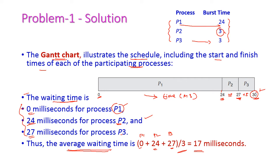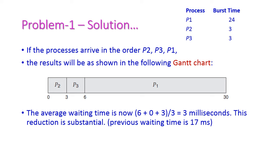Now let us see another order — how the average waiting time will get reduced. Suppose if the processes arrive in this order: first P2, then P3, then P1. Now let us draw the Gantt chart. P2 will start and execute first; finishing time is 0 plus 3 which equals 3. Next P3 will start execution; 3 plus 3 which is 6. After that P1 will start its execution with burst time 24; 6 plus 24 which is equal to 30.